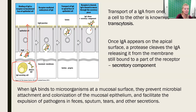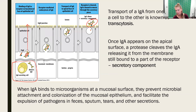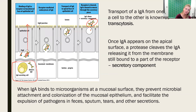Once the IgA is out in the gut, it's able to interact with pathogenic microorganisms at the mucosal surface and prevent those pathogens from attaching to or colonizing the epithelial layer. This is a really great job of neutralizing pathogens before they can make their way into or interact with the tissue.